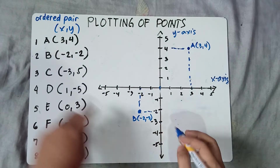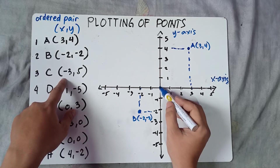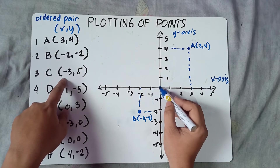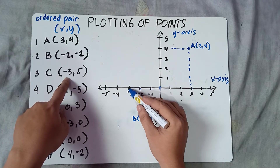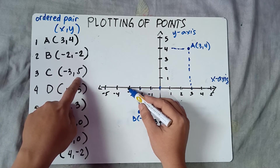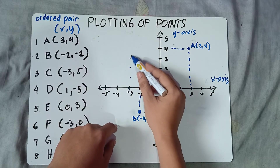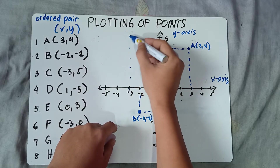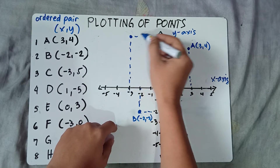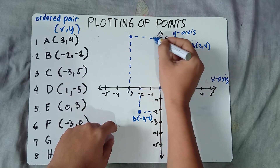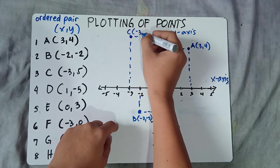Let's try letter C: (-3, 5). Starting from the origin, x is negative 3, so you move 3 units to the left — 1, 2, 3. Since y is positive 5, you move 5 units upward — 1, 2, 3, 4, 5. You can put a broken line if you want. So C equals (-3, 5).